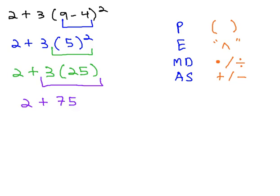So now we have 2 plus 3 times 25 is 75, and finally at the end, we can get to the adding and subtracting. 2 plus 75 is 77, and this becomes our solution.